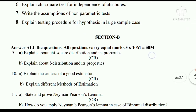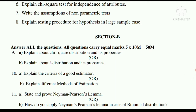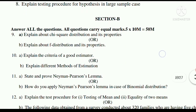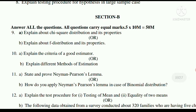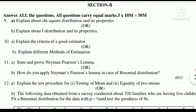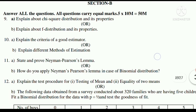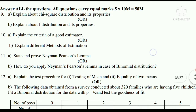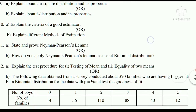11A: State and prove Neyman-Pearson lemma. 11B: How do you apply Neyman-Pearson lemma in the case of binomial distribution? 12A: Explain the test procedure for testing the mean and equality of two means. 12B: The following data obtained from a survey conducted about 320 families having five children — fit a binomial distribution for the data with P equal to half and test the goodness of fit.